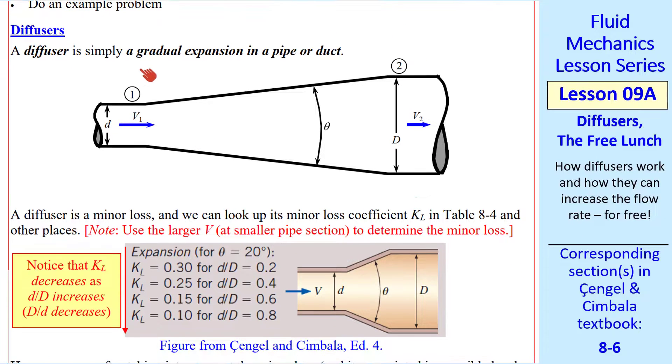What is a diffuser? It's simply a gradual expansion in a pipe or duct, as sketched here. If we go from 1 to 2, we have these average speeds, V1 and V2, but the diameter has increased with some angle theta. The pressures are P1 and P2.